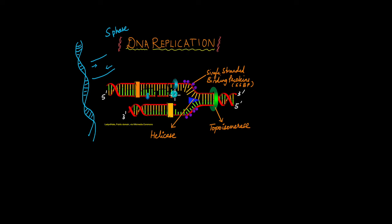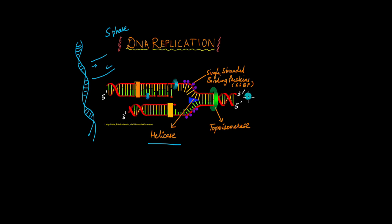The replication process is initiated when the helix is broken apart and the two strands are separated. That is done with the help of the enzyme known as helicase. Helicase breaks apart the hydrogen bonds between the two complementary bases and opens up the helix so that the two strands can be used as a template. As helicase is opening up the helix in one region of DNA, the other parts of DNA that are not opened up yet tend to coil too much together, forming something known as supercoils.